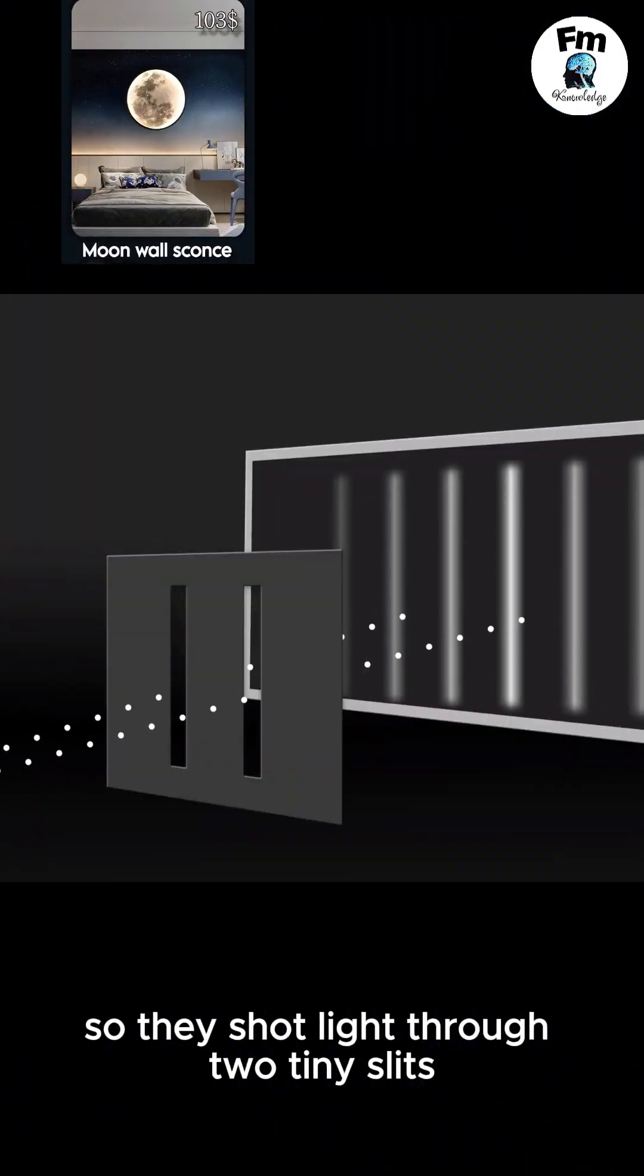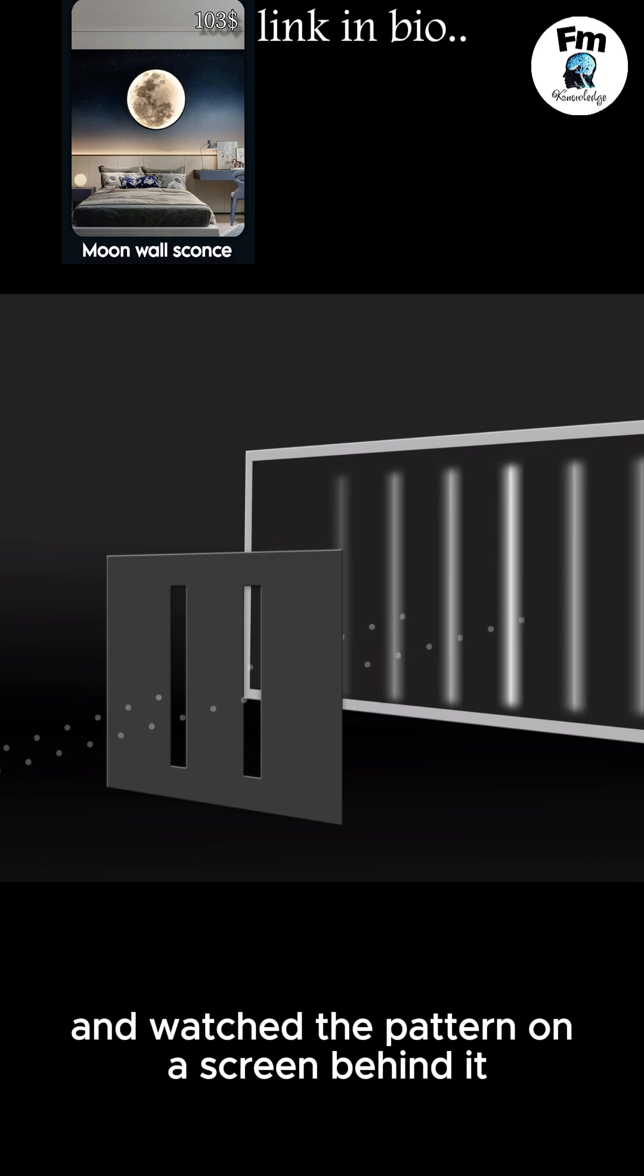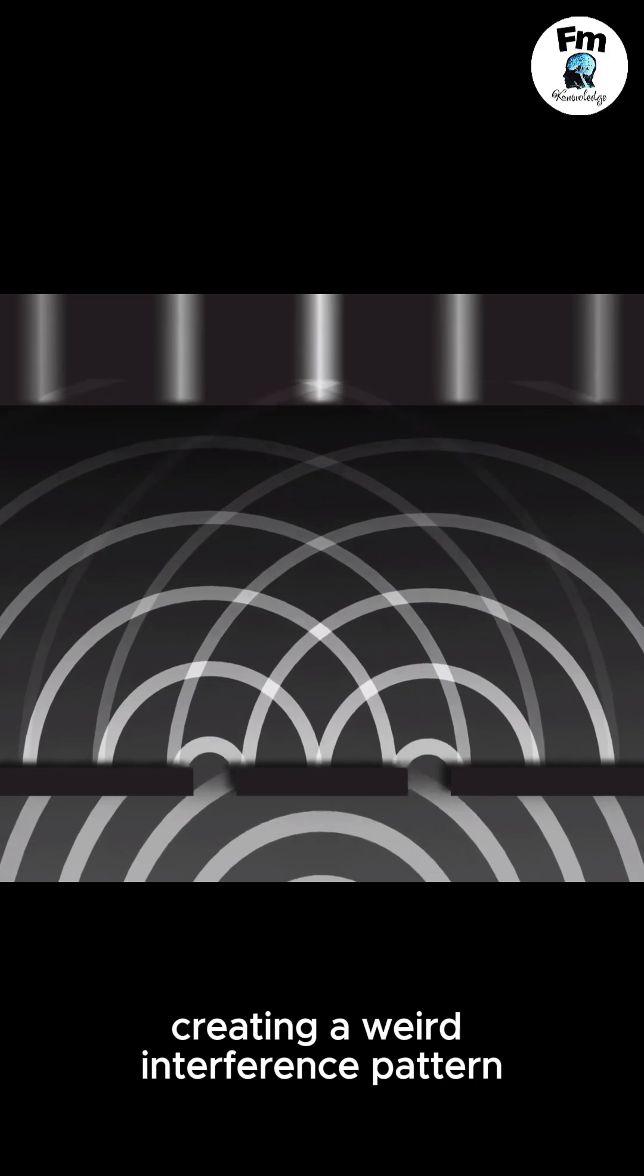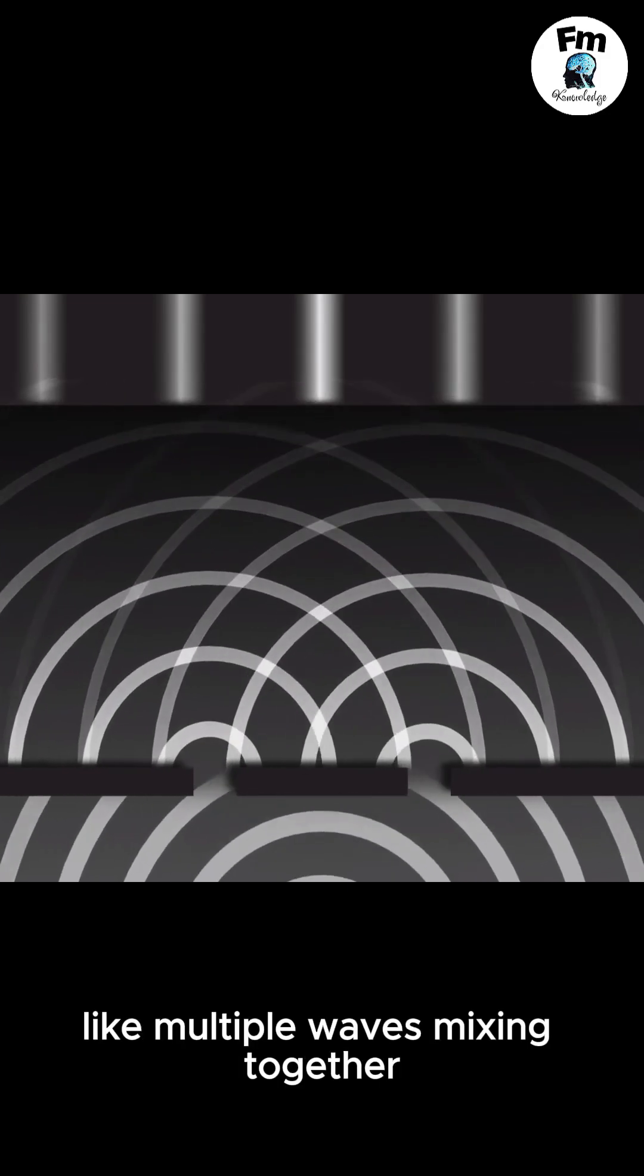So they shot light through two tiny slits and watched the pattern on a screen behind it. When no one was observing, light acted like a wave, creating a weird interference pattern, like multiple waves mixing together.